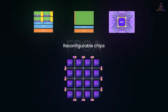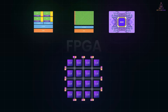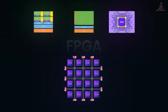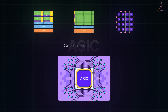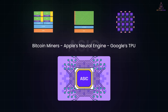FPGAs are reconfigurable chips — you design the hardware behavior itself. They are much faster and more parallel than CPUs for certain tasks, and unlike ASICs, you can reprogram them even after deployment. If your algorithm is predictable and can be pipelined — like in trading, telecom or compression — an FPGA can beat a CPU by orders of magnitude. ASICs are custom-made chips built for one purpose: ultra-efficient and ultra-fast, but expensive, time-consuming to make and cannot be changed once built. Think of Bitcoin miners, Apple's Neural Engine or Google's TPU.